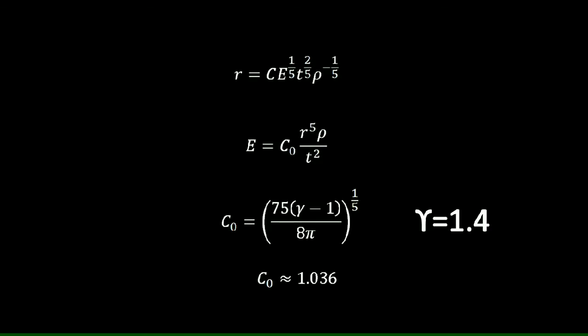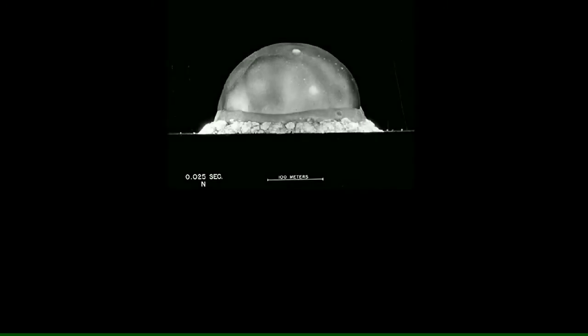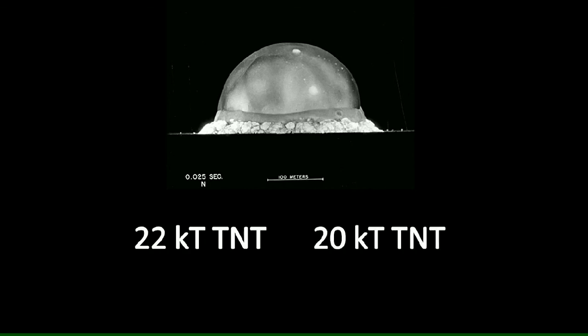In 1947, a clip of the Trinity test was made public. Using the approximation, it was found that the yield was about 22 kilotons of TNT. Whereas, the actual yield was 20 kilotons of TNT. And that brings us an error of just 10% which, to be honest, is pretty good.